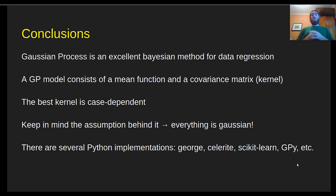I hope with this you have a better idea of how the Gaussian process works and how to implement it with Python. Gaussian process is an excellent Bayesian method for data regression. The Gaussian process model consists of a mean function that can be any function you want - it's usually a constant - and a covariance matrix called kernel. While there are lots of kernels that you can use, the best kernel is case-dependent.